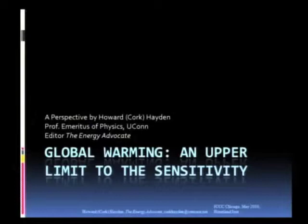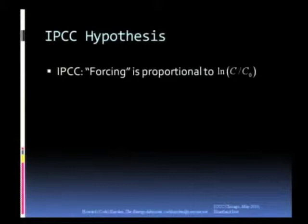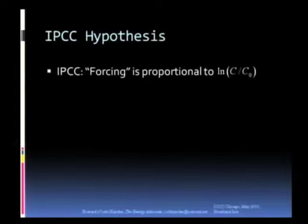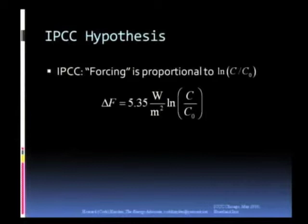I'm going to establish an upper limit to the sensitivity of the climate sensitivity. Beginning with the IPCC hypothesis that the forcing is proportional to the logarithm of C over C0. That is, if the carbon dioxide concentration is initially C0 and then it increases to C, that there shall be a forcing proportional to the logarithm of that ratio. And it is given by this formula that the forcing is equal to 5.35 watts per square meter times the logarithm of C over C0.